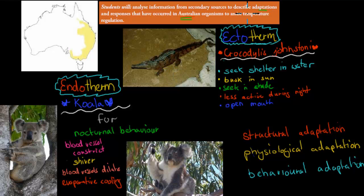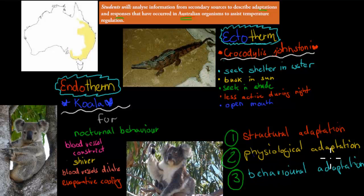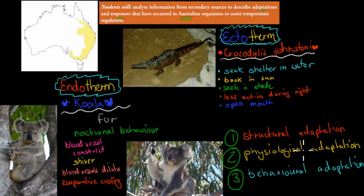It also says we need to describe adaptations and responses. There are three different types of adaptations. Structural — for example, fur, that's just a structure the koala has, a structural adaptation that helps it deal with its environment. Behavioral adaptation would be jumping into the pool, seeking shade, basking in the sun, seeking shelter. And physiological — that's like the aircon — what happens inside our body to maintain a constant internal environment. Ectotherms don't have as many physiological ones.